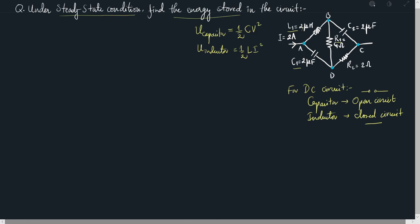To solve this type of problem, you can use the fact that in a DC circuit the capacitor is considered open and the inductor is considered closed, and you can draw the equivalent circuit diagram for this kind of problem.